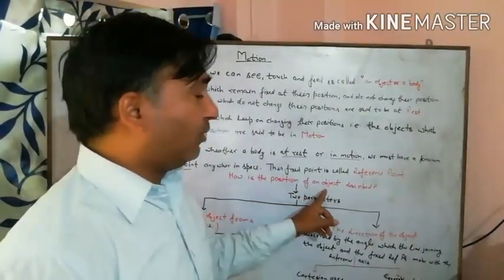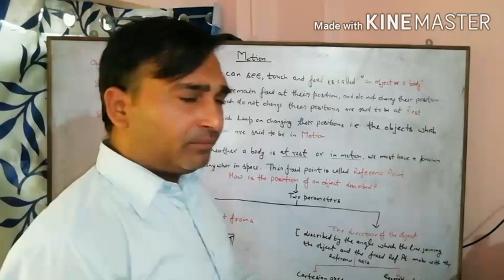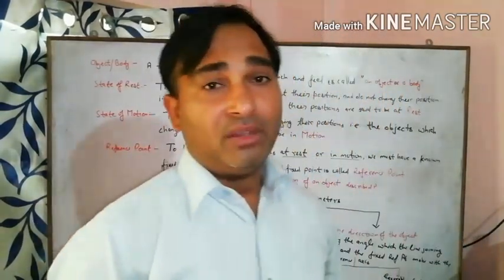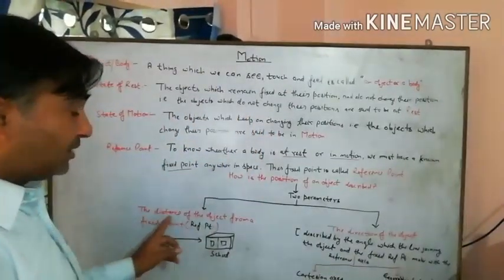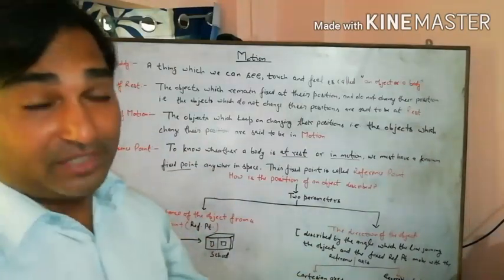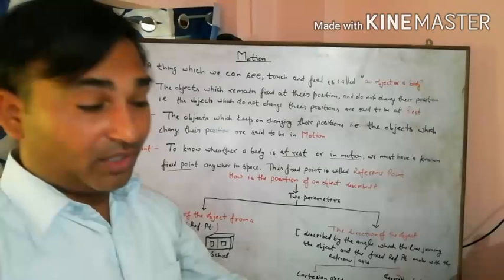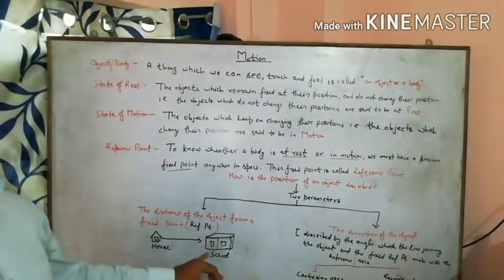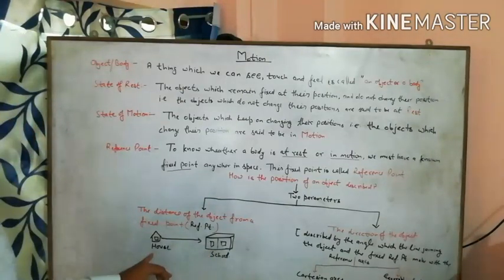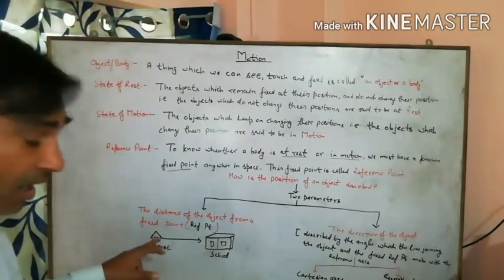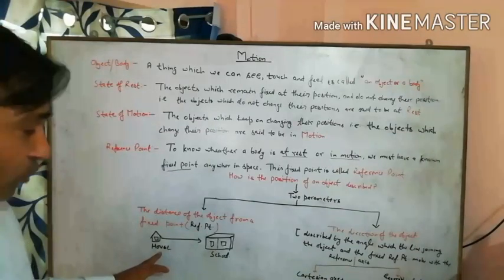How is the position of an object described? To describe the position of an object, there are two parameters we use. The first parameter is the distance of the object from a fixed point — the fixed point, as you already know, means reference point. For example, the position of your school with respect to your house: here your house is the reference point.